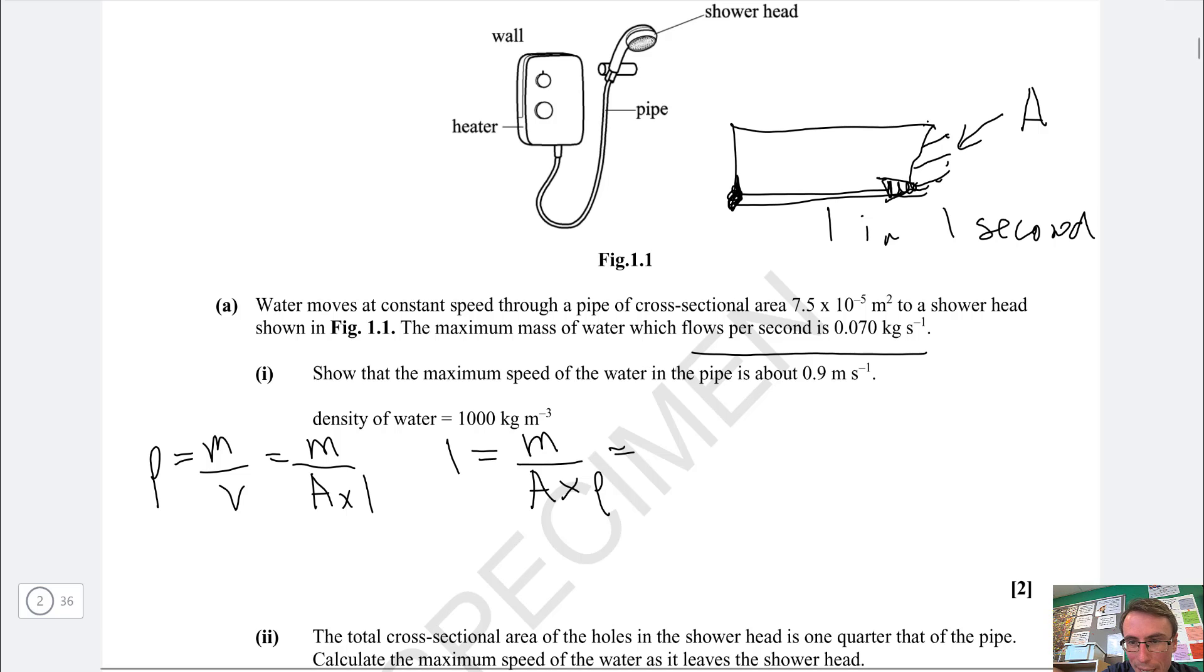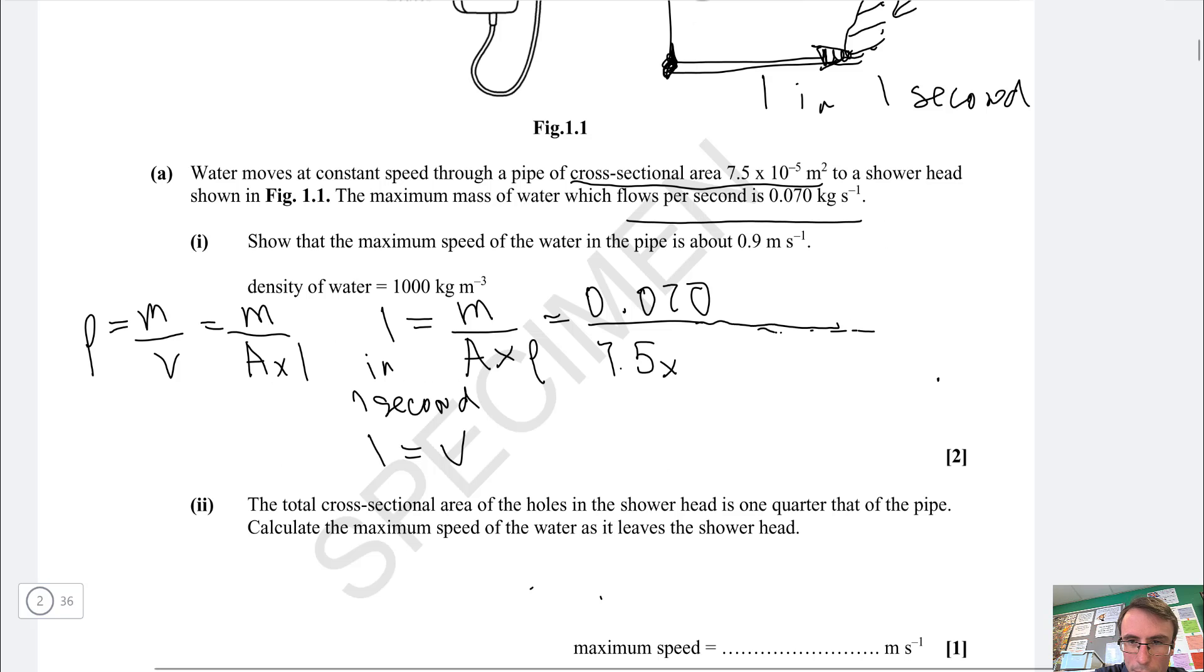Our maximum mass per second is 0.070. Let's divide that by the area which is 7.5 times 10 to the power of minus 5 and multiply that by the density which is 1000 kg per cubic meter. If we put this into a calculator we're going to get 0.93. This is actually speed because l is the distance traveled per second. If it's a show question it's always useful to include that extra significant figure because this will tell the examiner that you've done your working correctly.